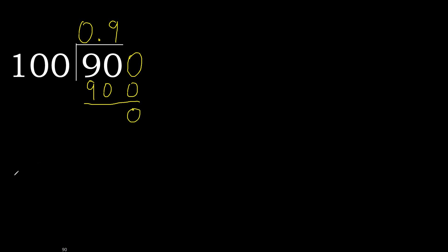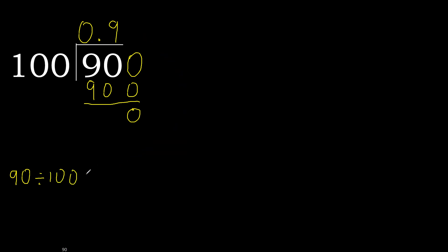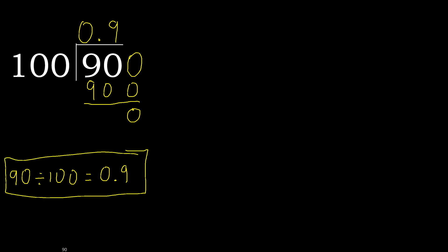Therefore, finish it: 90 divided by 100 is 0.9.